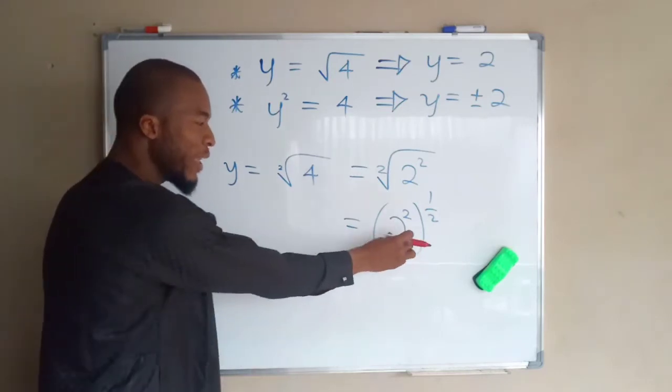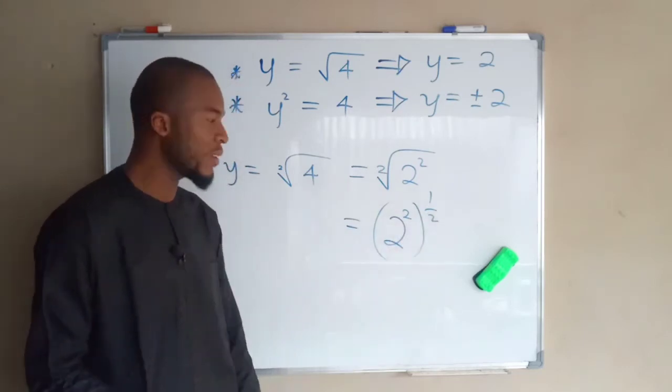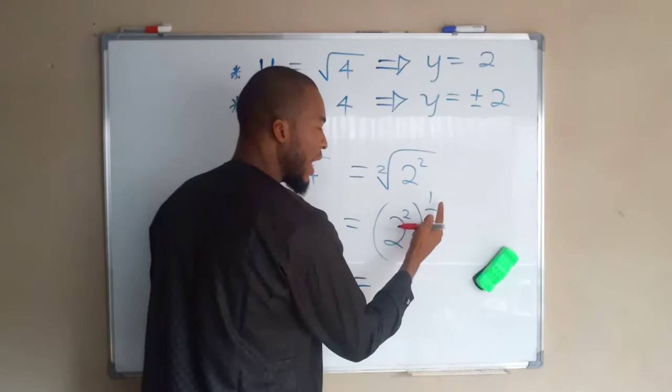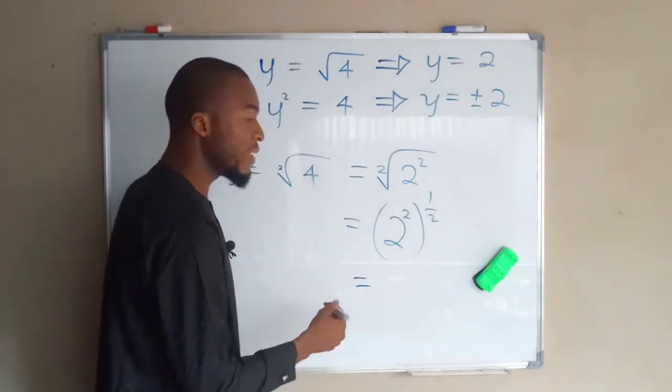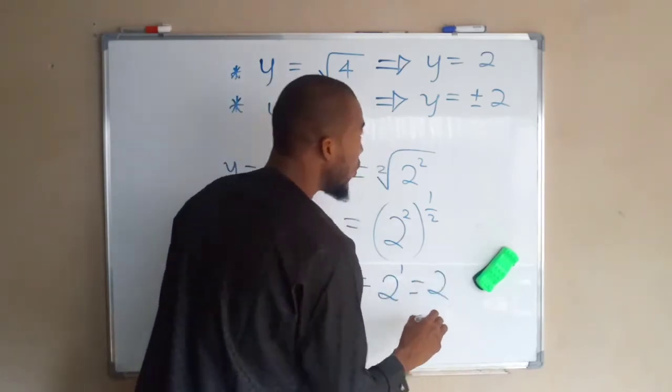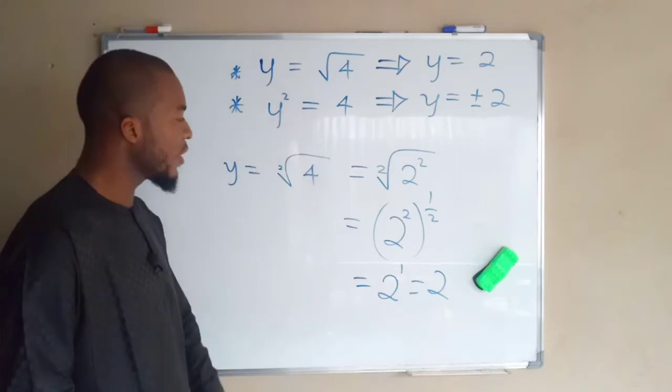I'm going to apply law of indices here again. Laws of indices says you can multiply the index together, and this equals two times half, which is the same thing as one. So we end up having two to the power of one, which is the same thing as two. Hence proved.